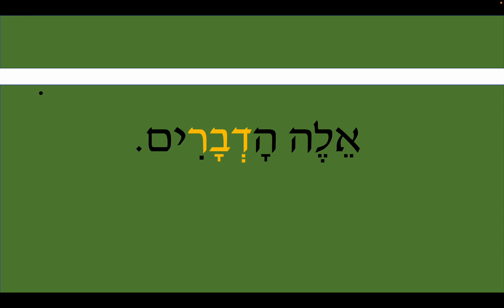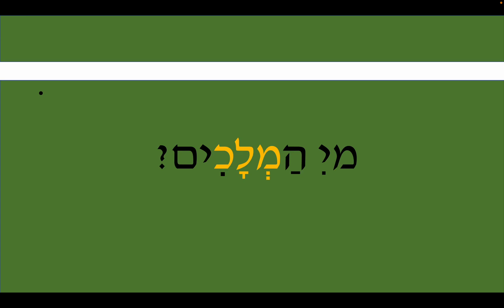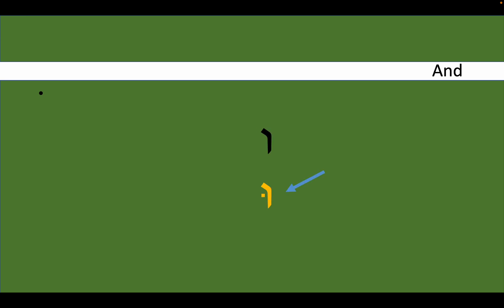Examples in sentences: Eile hadvarim — these are the words. Mi hamlachim — who are the kings? Also, note that 'and' can be written in two different forms: sometimes as 'v' and sometimes as 'u.' Both are ways of showing the word 'and.'